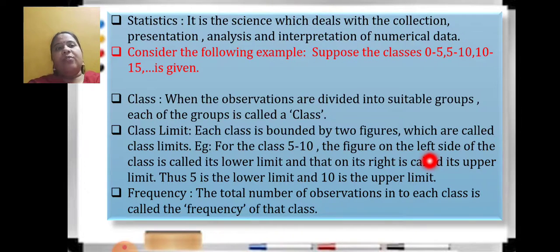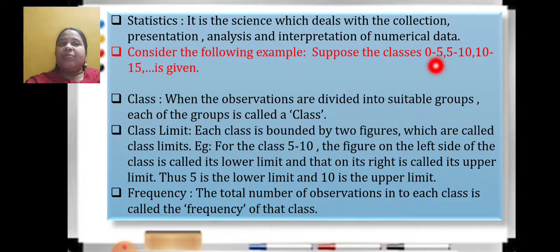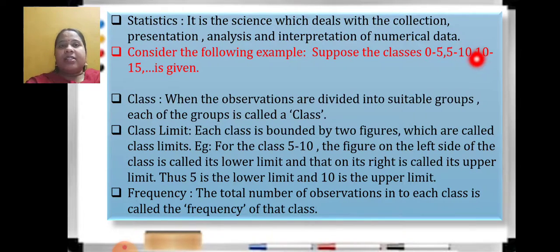All this is just a revision of the basic concepts you already learned last year. Frequency means the total number of observations in each class is called the frequency of that class. I will group students into classes — students getting marks in the range of 0 to 5, then 5 to 10. These are continuous classes: 0 to 5 includes marks 0, 1, 2, 3, and 4 — 5 is included in the next class. 5 to 10 means 5, 6, 7, 8, 9 — and 10 is in the next class.